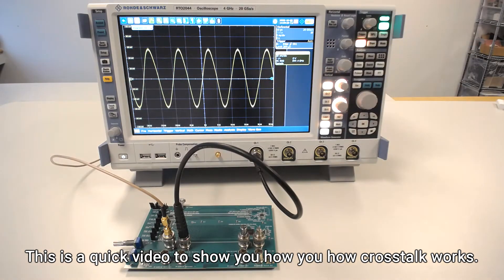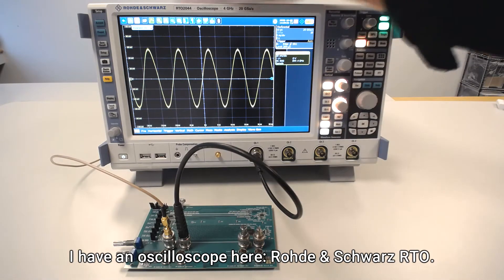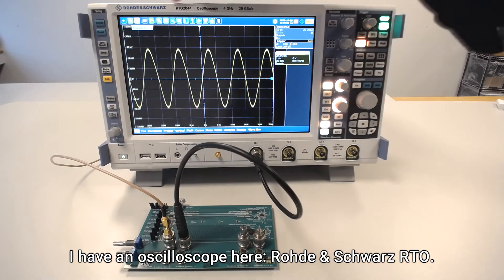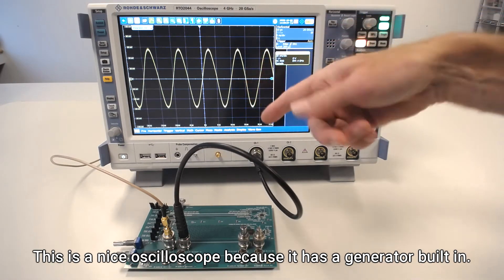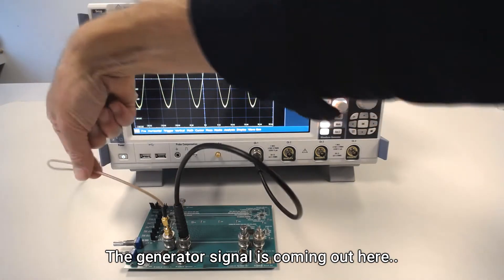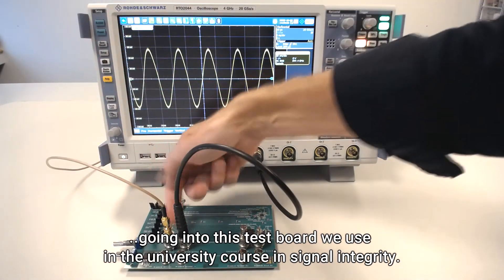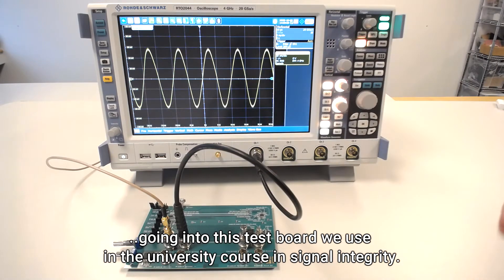This is a quick video to show you how crosstalk works. I have an oscilloscope here, a Rohde & Schwarz RTO. This is a nice oscilloscope because it has a generator built in, so the generator signal is coming out here, going into this test board that we use in the university course in signal integrity.